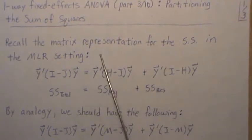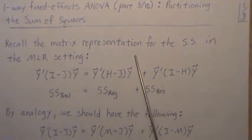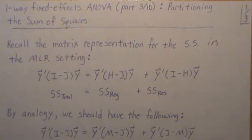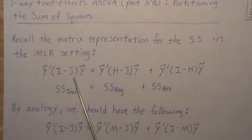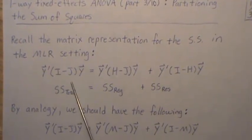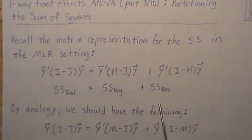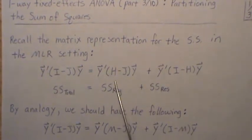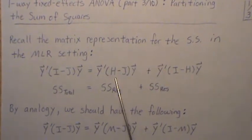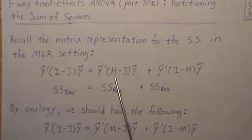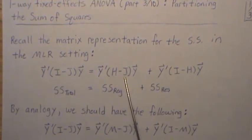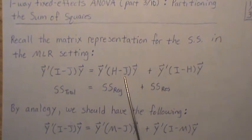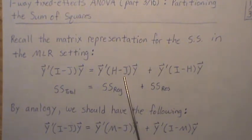Recall in matrix representation for the sum of squares in the multiple linear regression setting, we partitioned the total sum of squares into regression sum of squares and residual sum of squares, where H was the hat matrix — the perpendicular projection matrix onto the column space of X — and J was the perpendicular projection matrix on the column space of 1.